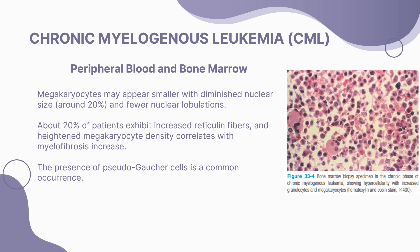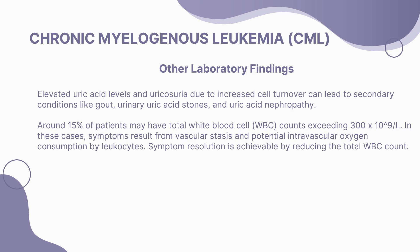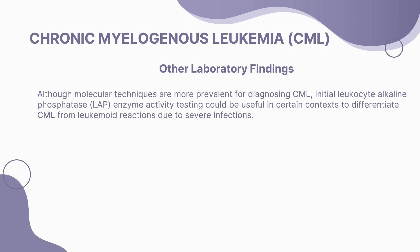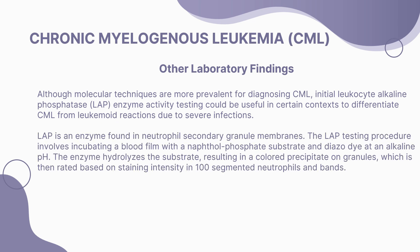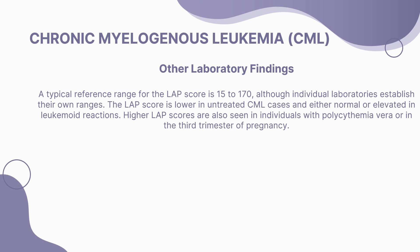Other laboratory findings reveal elevated uric acid levels and uricosuria due to increased cell turnover, potentially leading to gout and urinary stones. Around 15% of patients may have total white blood cell counts exceeding 300 billion per liter, resulting in vascular stasis-related symptoms. Confirming CML diagnosis involves revealing the T(9;22) translocation, identifying the BCR-ABL1 fusion gene, and detecting the BCR-ABL1 fusion transcript. The leukocyte alkaline phosphatase (LAP) score, with a reference range of 15 to 170, is lower in untreated CML and higher in leukemoid reactions.